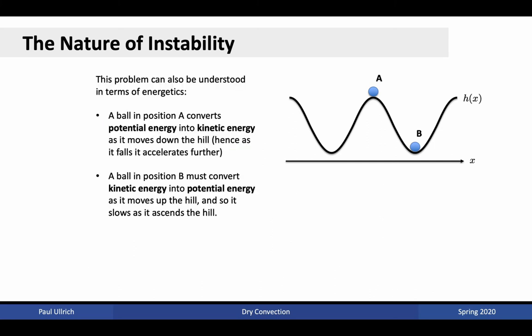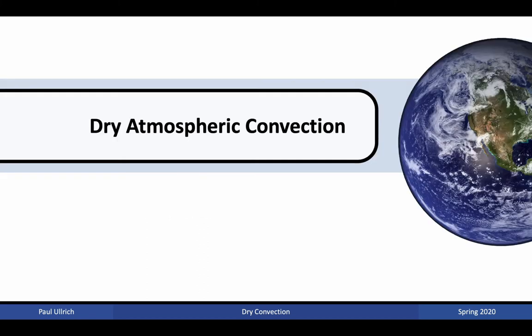In terms of energetics, in position A, the ball converts potential energy into kinetic energy as it moves down the hill, and hence accelerates further. Whereas in position B, the ball must convert kinetic energy into potential energy to climb the hill. Since the energy is only equal to the amount of the initial perturbation, it can only convert that into a limited amount of potential energy and is unable to climb fully up the hill.